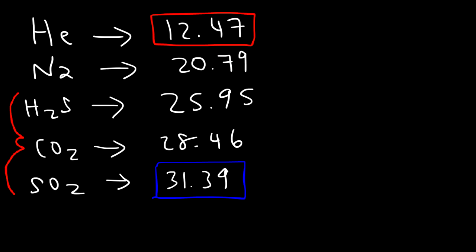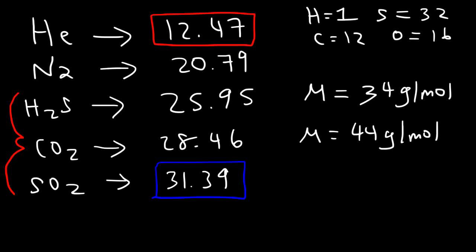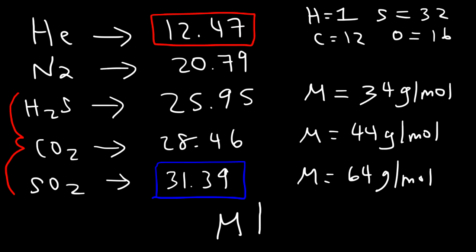Comparing triatomic molecules with the same number of atoms, there's a trend between molar mass and molar heat capacity. Hydrogen has atomic mass 1, sulfur is 32, so H₂S is 34 g/mol. Carbon is 12 and oxygen is 16, so CO₂ is 12 + 16×2 = 44 g/mol. SO₂ is 32 + 16×2 = 64 g/mol. For triatomic gases, as the molar mass increases, the molar heat capacity also increases. The basic idea: as molecular complexity increases, molar heat capacity increases.